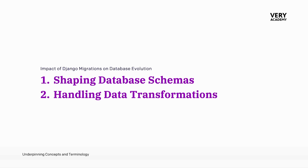In our Django ORM Mastery course, we have split Django migrations into two modules: first, looking solely at shaping database schemas, and then focusing on handling data transformations.